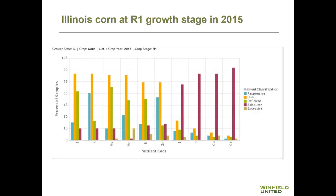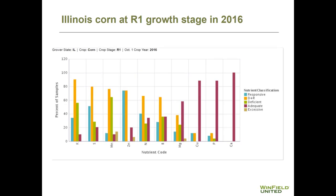If we switch to later in the growing season — specifically the R1 growth stage or silk emergence in corn in 2015 — the top four nutrients deficient in corn in Illinois at R1 in 2015 are sulfur, potassium, magnesium, and manganese, with sulfur and potassium being the top nutrients deficient at this particular growth stage. Similarly in 2016 at R1, potassium and sulfur are the number one and number two nutrients deficient in corn, and then manganese and zinc are the third and fourth most deficient nutrients.